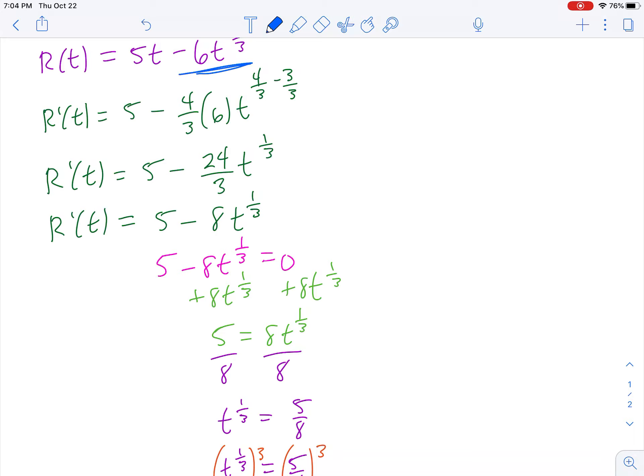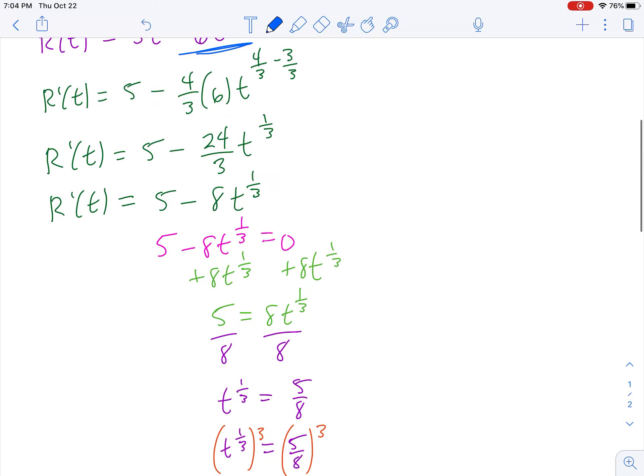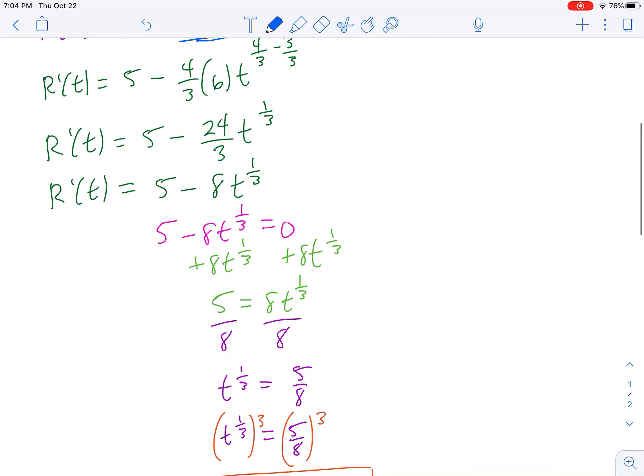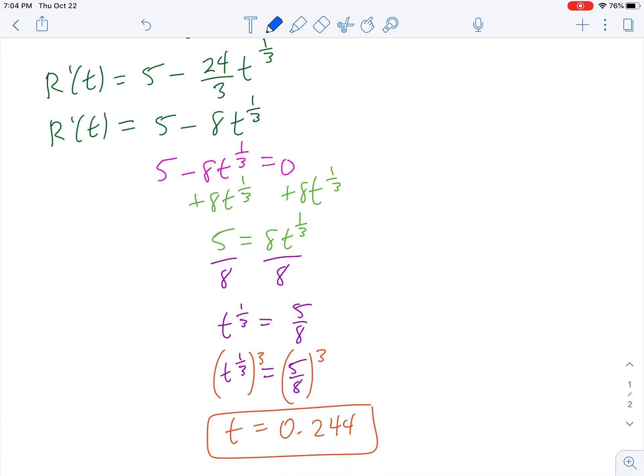Then 6 times 4 is 24, 24 over 3, t to the one-third power, because that's what's left after I take three-thirds away from four-thirds. So 24 divided by 3 is just 8. So my first derivative looks like this.